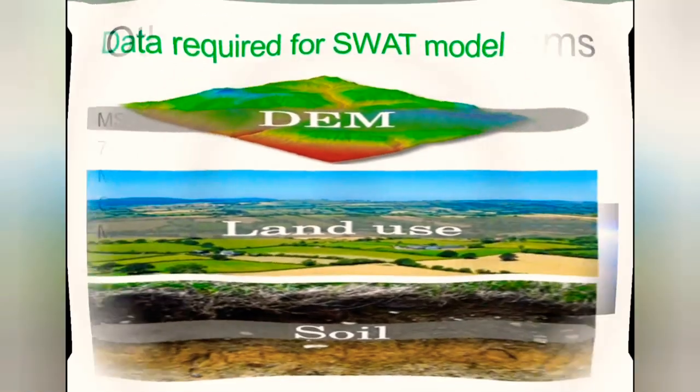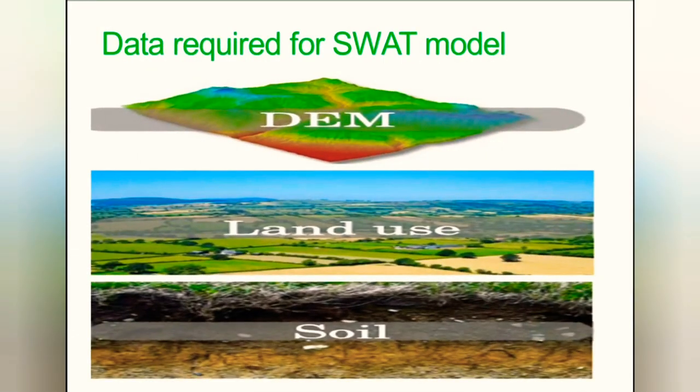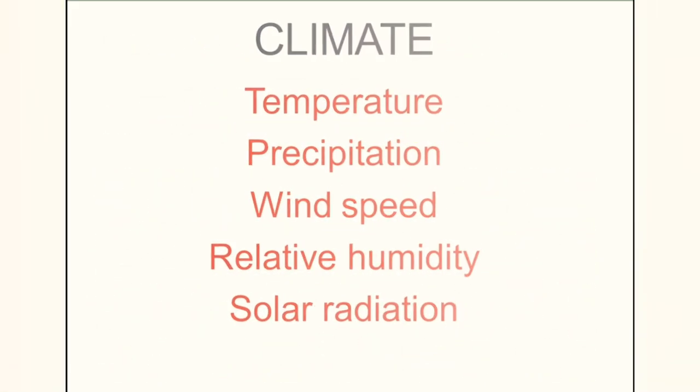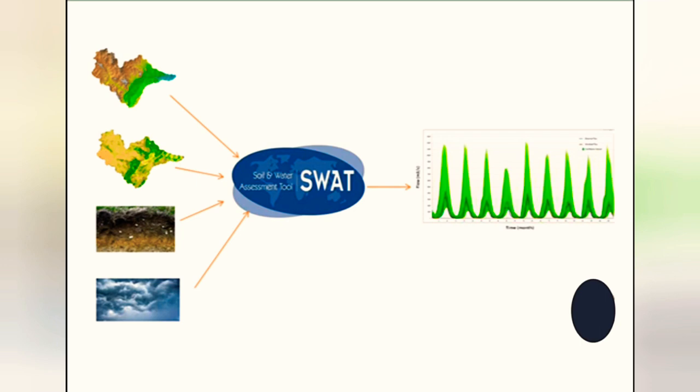The data required for SWAT model includes Digital Elevation Model (DEM), which is elevation data, land use data, soil data, and climate data. These four key data types enable SWAT to run and give you the desired output.